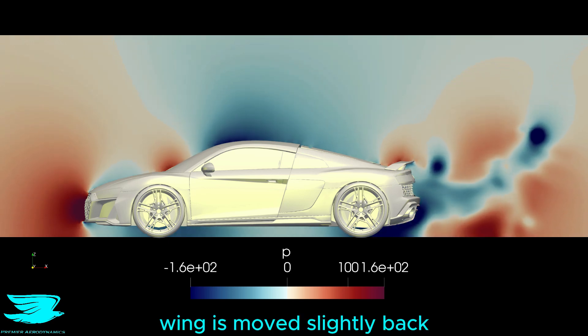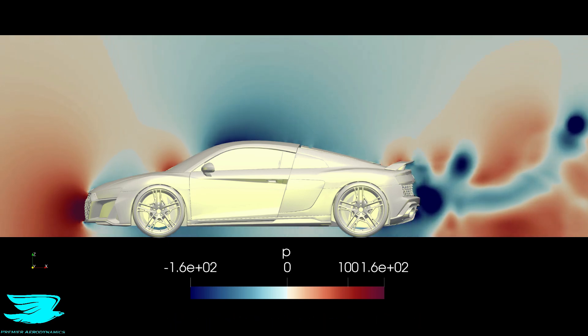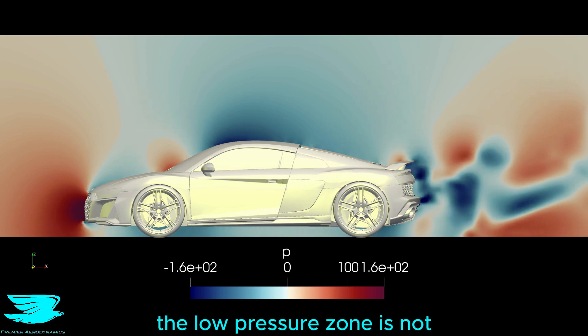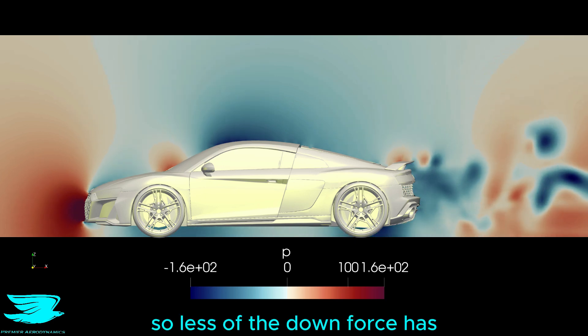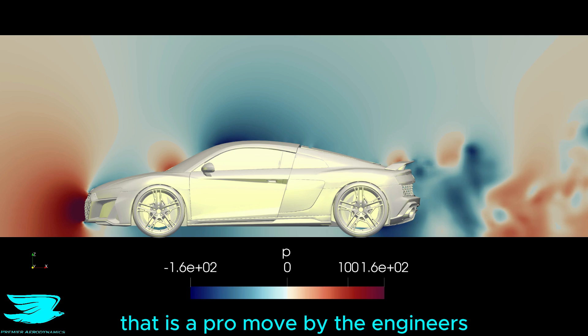Instead, because the rear wing is moved slightly back, tilted and elevated a little, the low pressure zone is not impacting the trunk as much, so less of the downforce is being cancelled out. That is a pro move by the engineers.